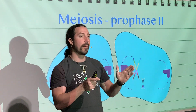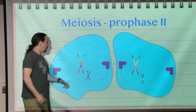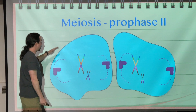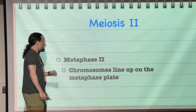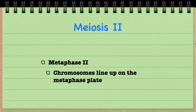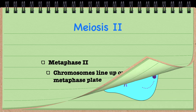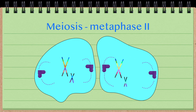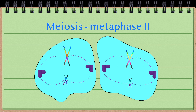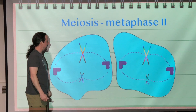So if this looks familiar, that's a good thing. Next, metaphase II: the chromosomes are going to line up along the metaphase plate, and just like in metaphase, they're going to line up in single file right along the metaphase plate.